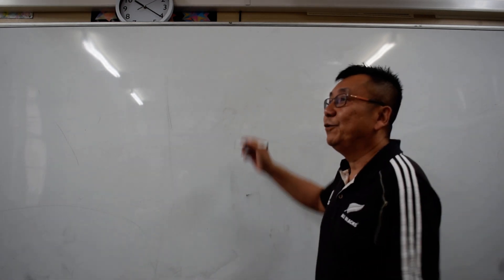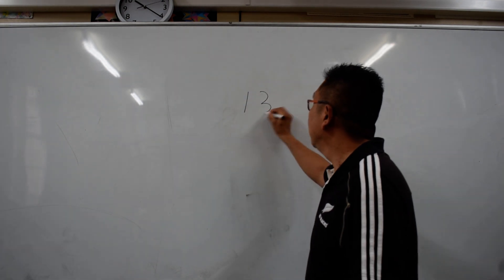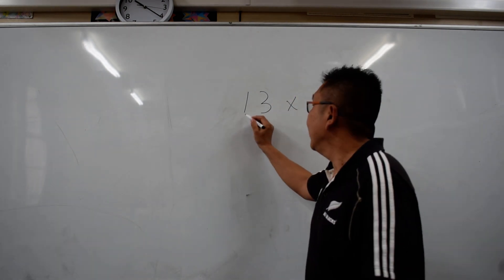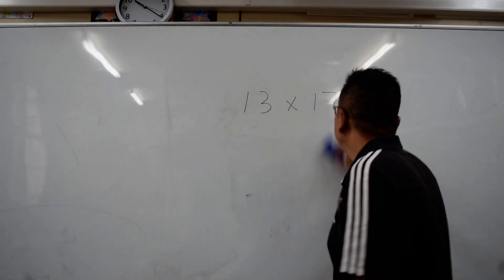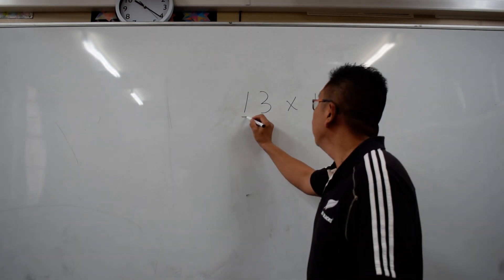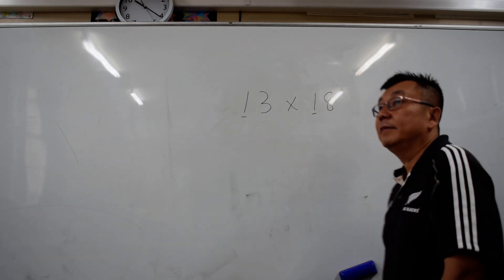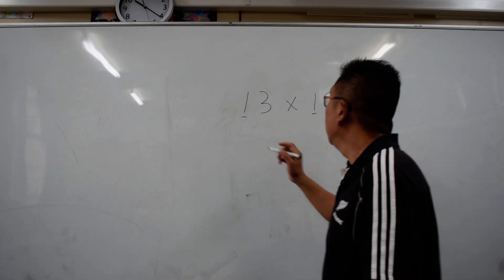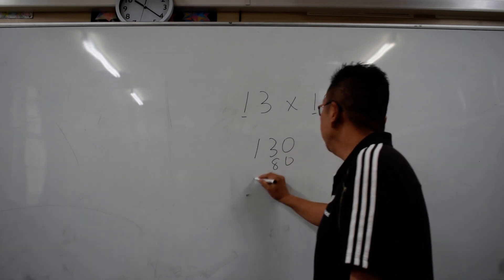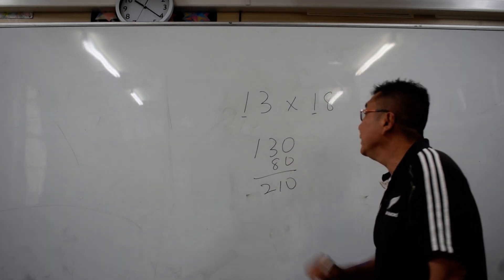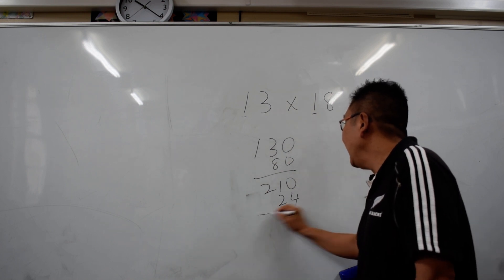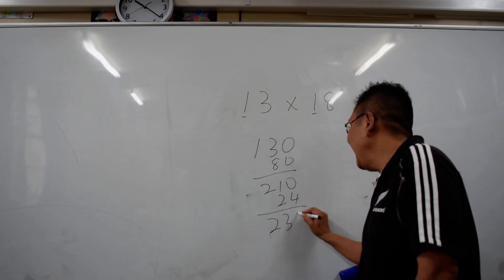Now we shall do a multiplication of 13 times 18. The first digits are the same. What you do is put 130 plus 80, which gives you 210. And then you multiply 3 by 8, which is 24. Add them up and the answer is 234.